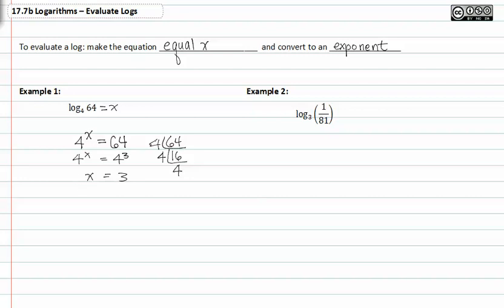Another way of thinking about this same exact problem is by saying four to the x is equal to sixty-four. If I prime factor four, I get two times two. So I could rewrite the first one as two to the second raised to the x.